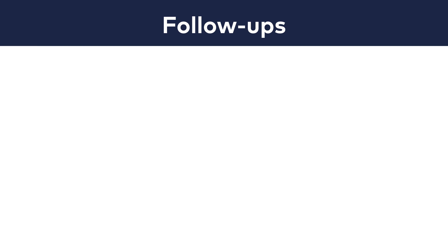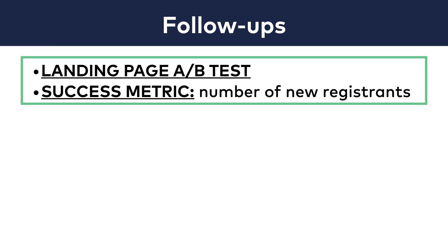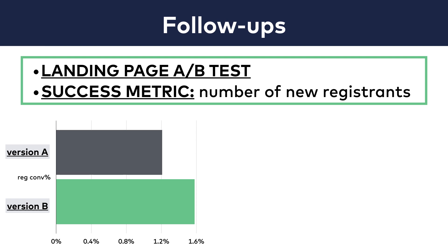When you run an A-B test, you check only its immediate impact. But it's also important to follow up in a few months, so you can see the long-term effects too. Here's an example. Let's say that you have a product with a subscription plan and you want to get more registrations. You run the test, you evaluate it, and it turns out that version B performs 30% better than version A.